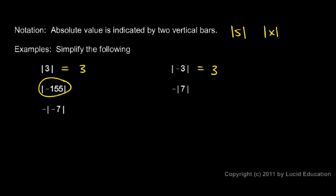The absolute value of negative 155 is 155. Sometimes you can think of the absolute value as being the positive of a number. And that's not a bad way to think of it. Just realize that it's really defined as the distance from the origin.